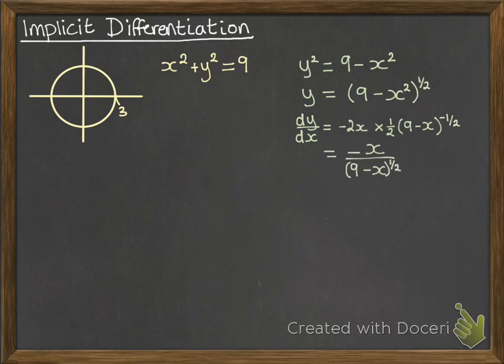But we can actually differentiate this without that extra step of having to rearrange it into y equals something. We use implicit differentiation. So with that x squared plus y squared equals 9, we're going to differentiate each of those terms with respect to x. So x squared differentiates to 2x.